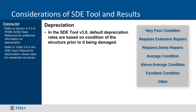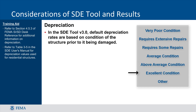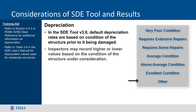In the SDE tool, there are six different depreciation ratings, ranging from very poor to excellent. A building in very poor condition is dilapidated and uninhabitable. The next rating, requires extensive repairs, means it can be inhabited but needs a lot of repairs and maintenance. Requires some repairs means the structure can be inhabited but needs a few repairs. A structure in average condition will show normal wear but no signs of major repairs needed. Above average condition will show little visible wear but is not considered brand new. The final rating, excellent condition, is for structures recently built — two years old or less — with no visible deterioration. Inspectors may record a higher or lower value than the default depreciation value based on the condition of the structure. For more information, refer to Table 3.5 in the SDE User Manual and Field Workbook.